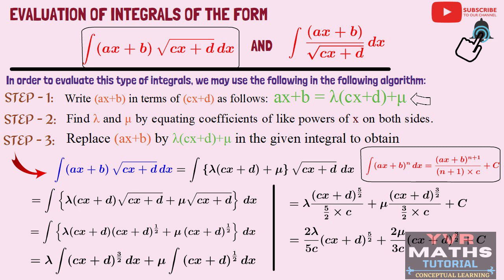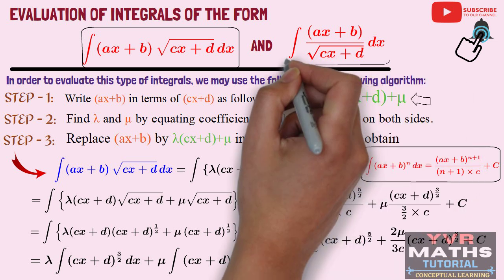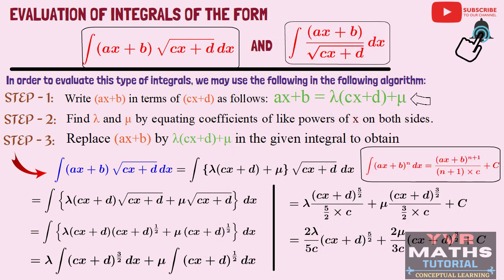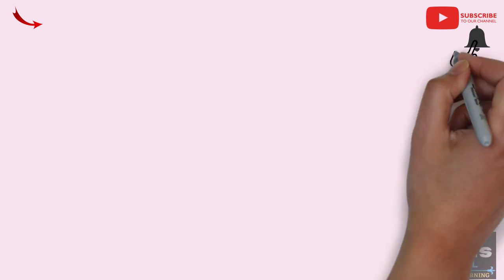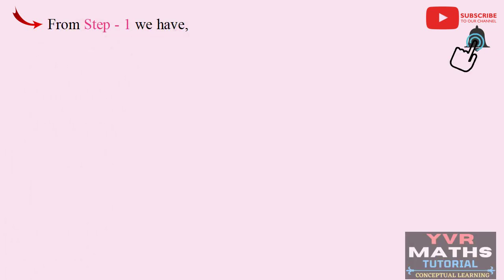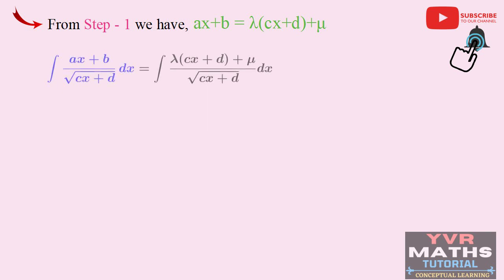Using the same Steps 1 and 2, we solve the second integral: integral (AX + B) / √(CX + D) dx. The numerator AX + B can be written as λ(CX + D) + μ. So the integral becomes integral [λ(CX + D) + μ] / √(CX + D) dx.